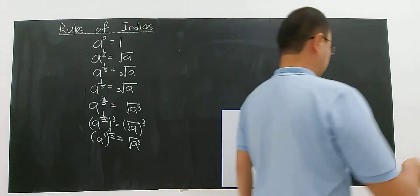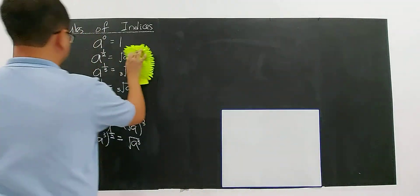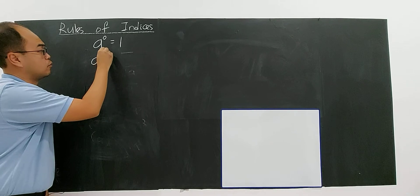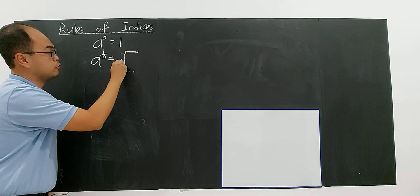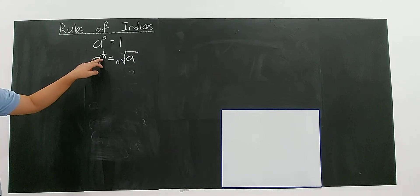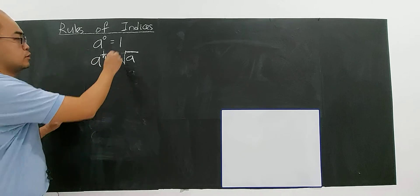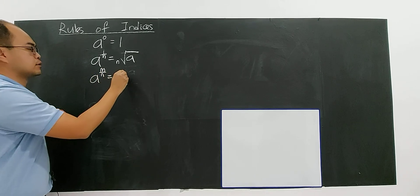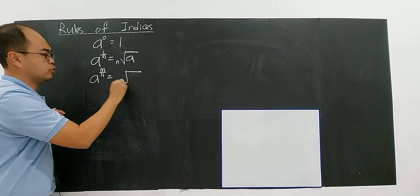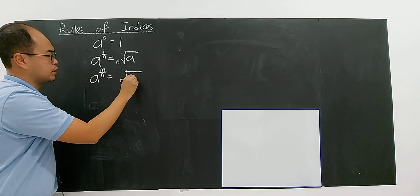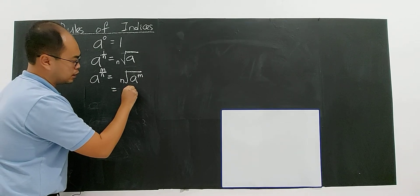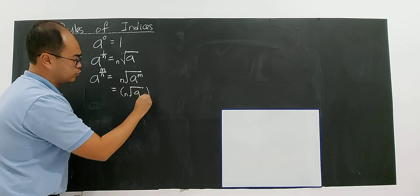To conclude: if you have A to the power of 1 over N, you will have the Nth root of A. For example, 1 over 5 means the 5th root of A. And if you have A to the power of M over N, the denominator becomes the root and the top becomes the power — the Nth root of A to the power of M. You can also write it as the Nth root of A, everything to the power of M.